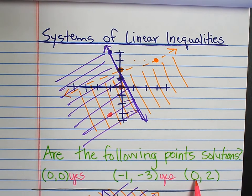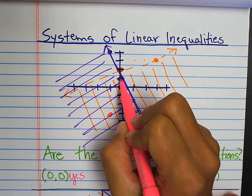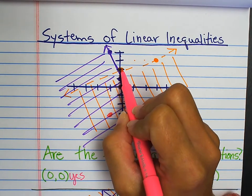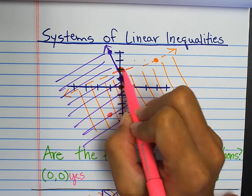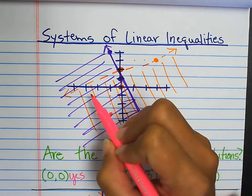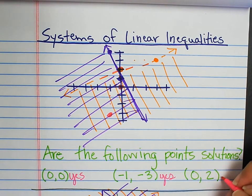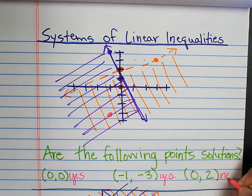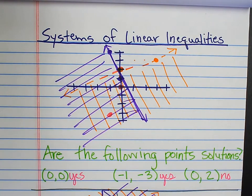Let's look at the point zero, two. This is a point that lands on the dashed line. If it lands on the dashed line, that is not inclusive. So, zero, two would not be in the solution set for this system of linear inequalities.